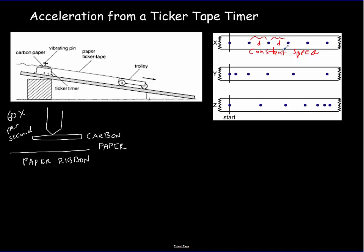An object always traveling the same distance in the same time means constant speed. An object covering bigger and bigger distances per interval is speeding up. An object covering smaller and smaller distances in 1/60th of a second is slowing down.